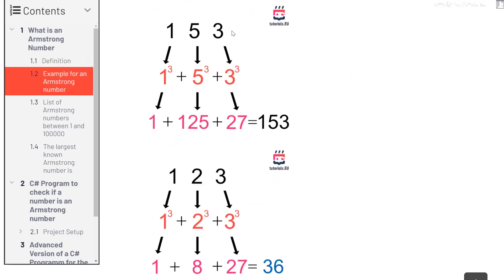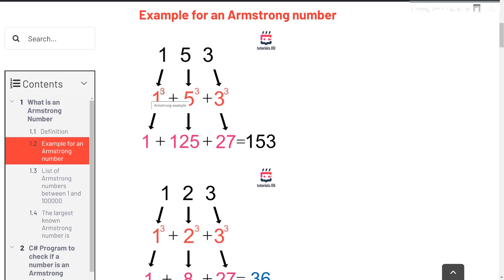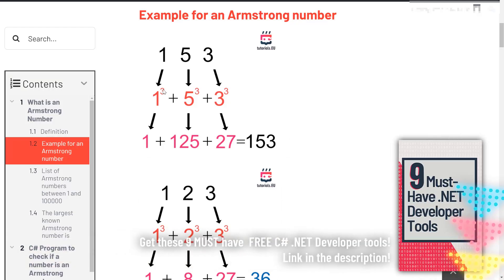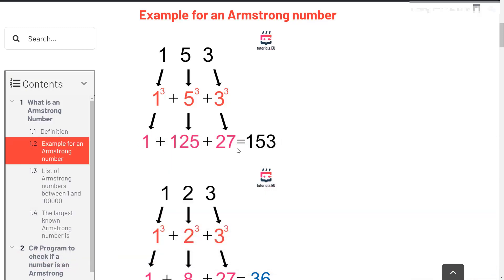What helps more are these two graphics. An Armstrong number is a number where the number at the top is equal to the result at the bottom right. For example, you take the first digit raised to the power of 3, plus the second digit raised to the power of 3, plus the third raised to the power of 3. The exponent is always the number of digits. So 1³ is 1, 5³ is 125, and 3³ is 27, giving a total sum of 153. Since that sum equals the original number, it is an Armstrong number.